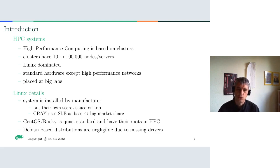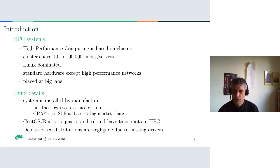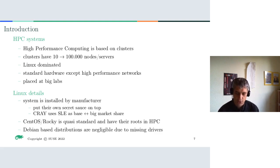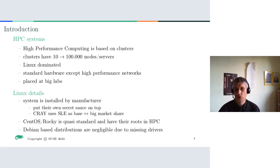The Linux system on these clusters is usually installed by the manufacturer — you order the cluster from a company and they install Linux with their own special configuration. One of the major vendors selling big clusters is D-based. CentOS and Rocky are the quasi-standard for these clusters, which is not really a surprise because Rocky and CentOS have their roots in the HPC business. Debian-based systems are not common in HPC because they are missing the drivers needed for high performance networks.